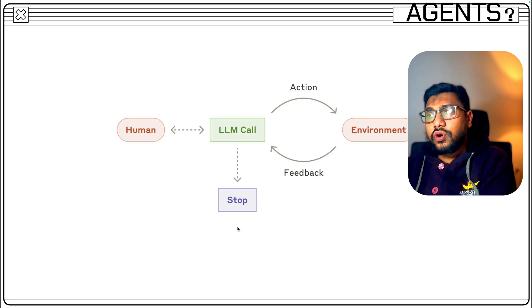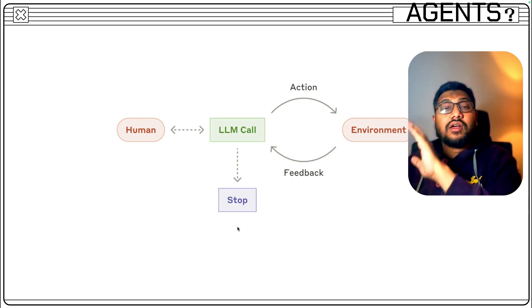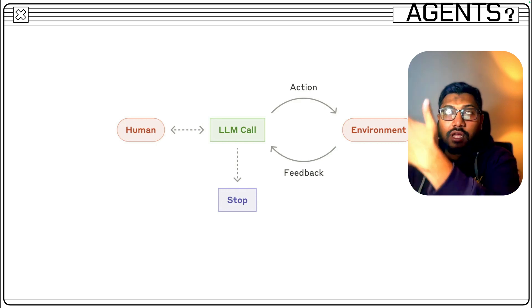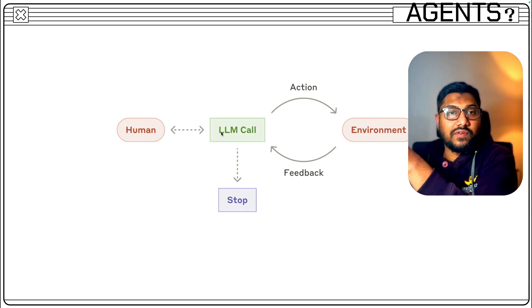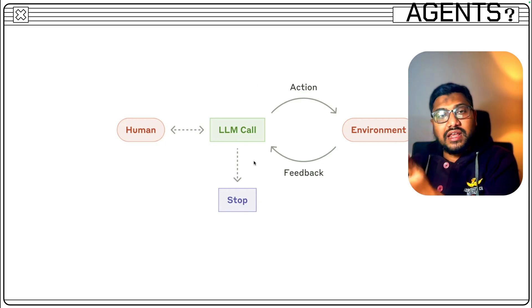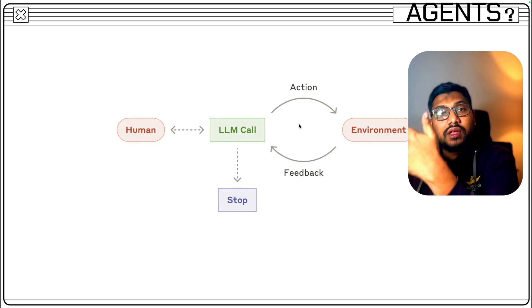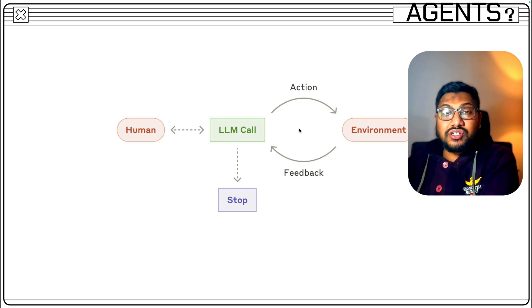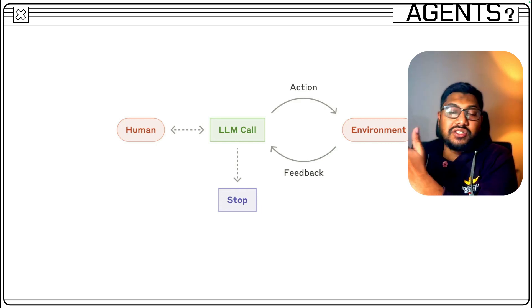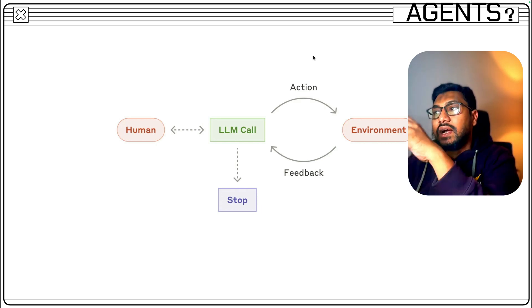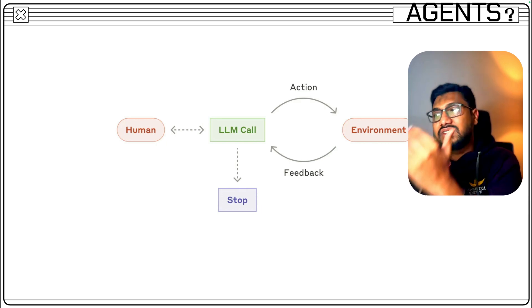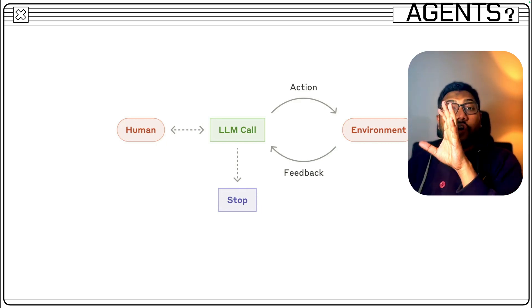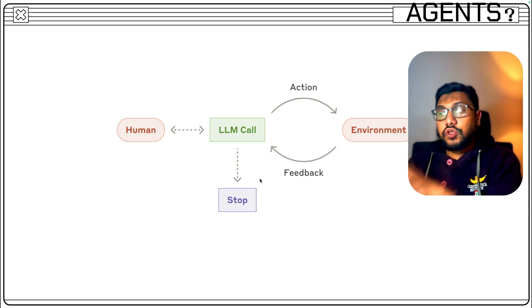How would you implement this in code, without using agentic frameworks like CrewAI, LangGraph, or PyAutoGen? Typically, you would have users sending a message, there is an LLM, and a bunch of tools attached to the LLM. Those tools will also have a retrieval element, and the retrieval element will have some memory. Then it retrieves, there is an environment where it safely gets executed, and comes back with everything. Finally, if the objective is done, you stop it.